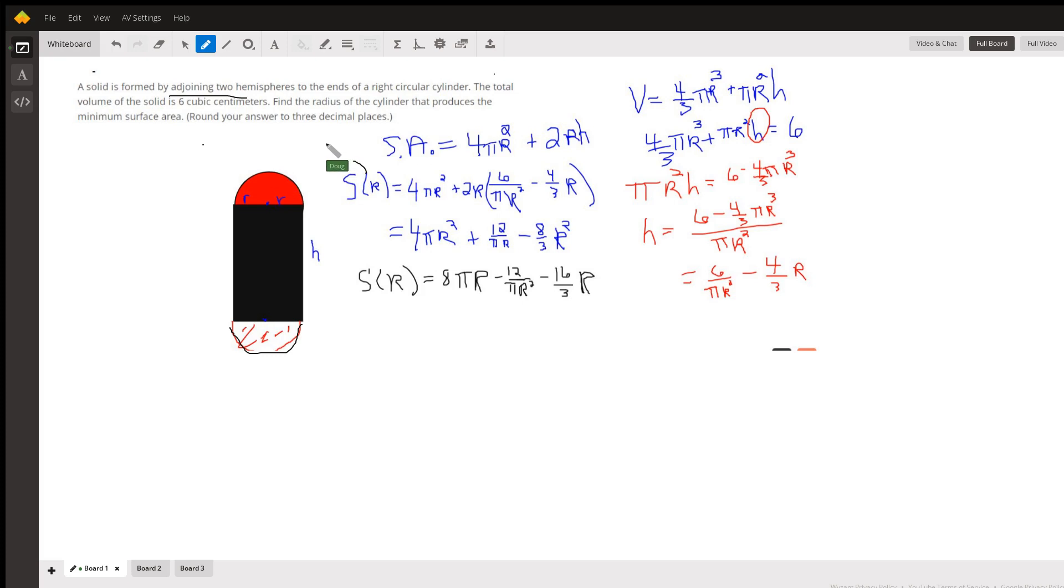The surface area, let's find a formula for the surface area which is what we're trying to minimize. The surface area for a sphere is 4πr² where r is this little radius right here, capital R there since I did r everywhere else.